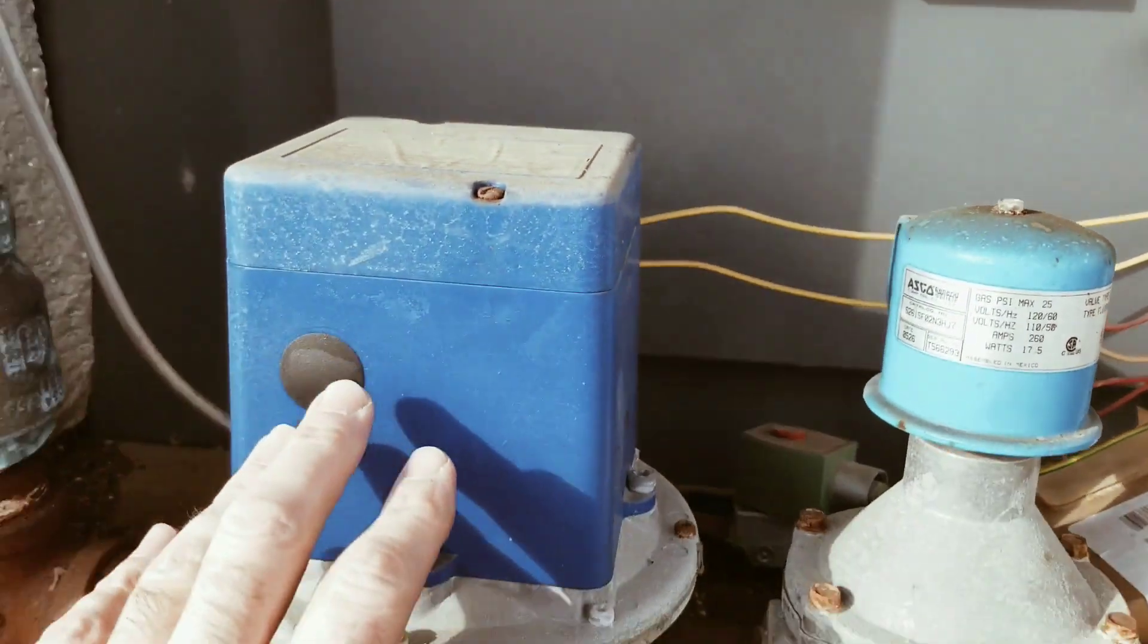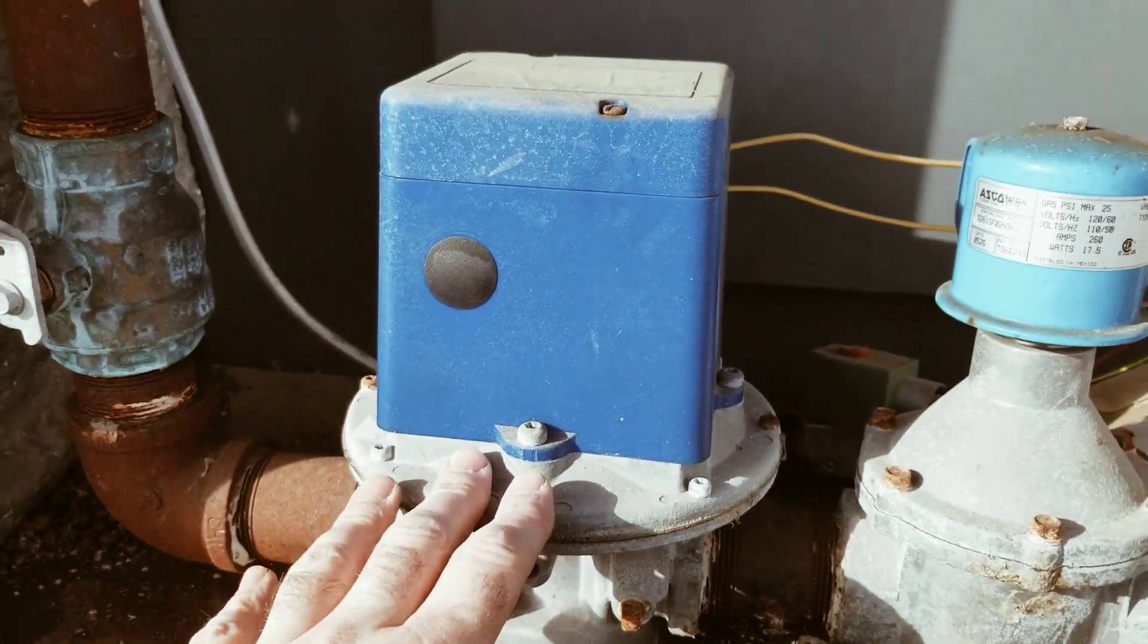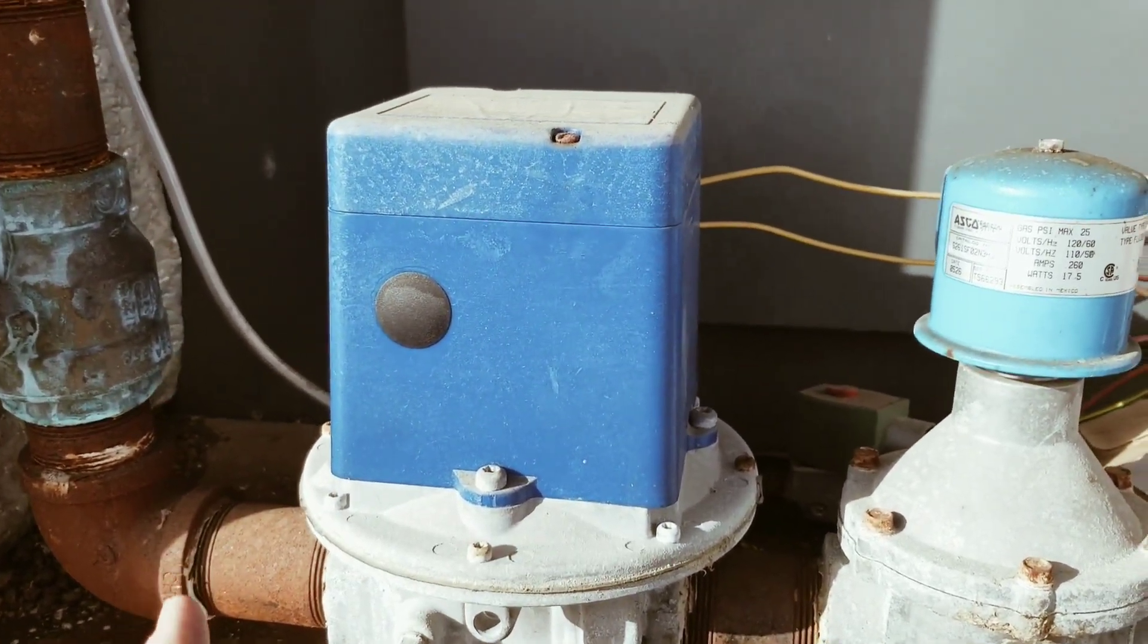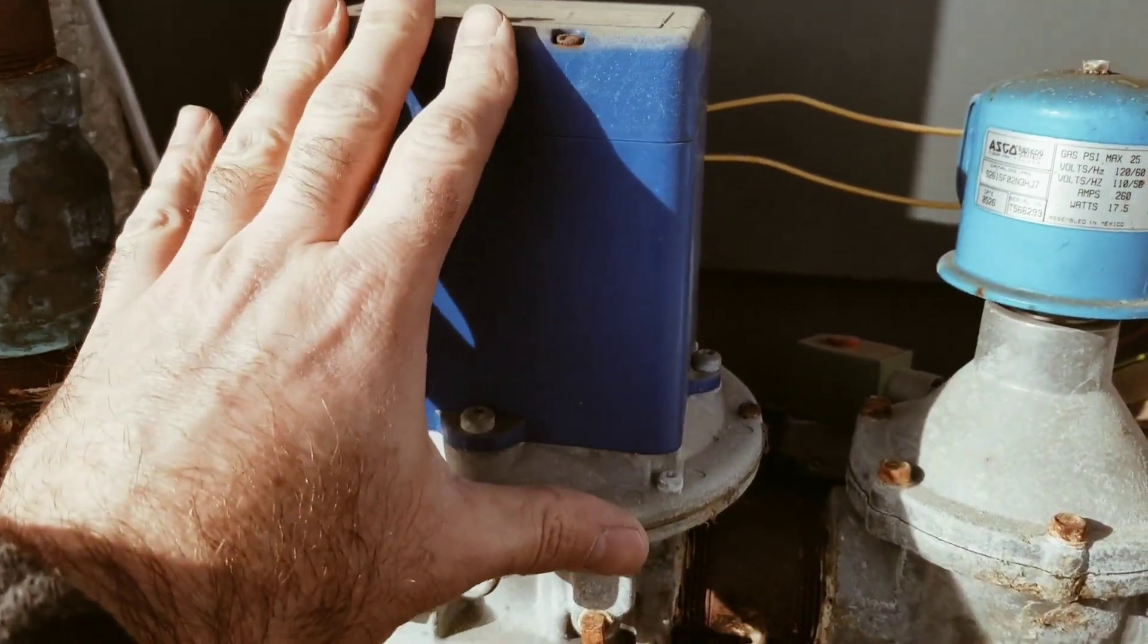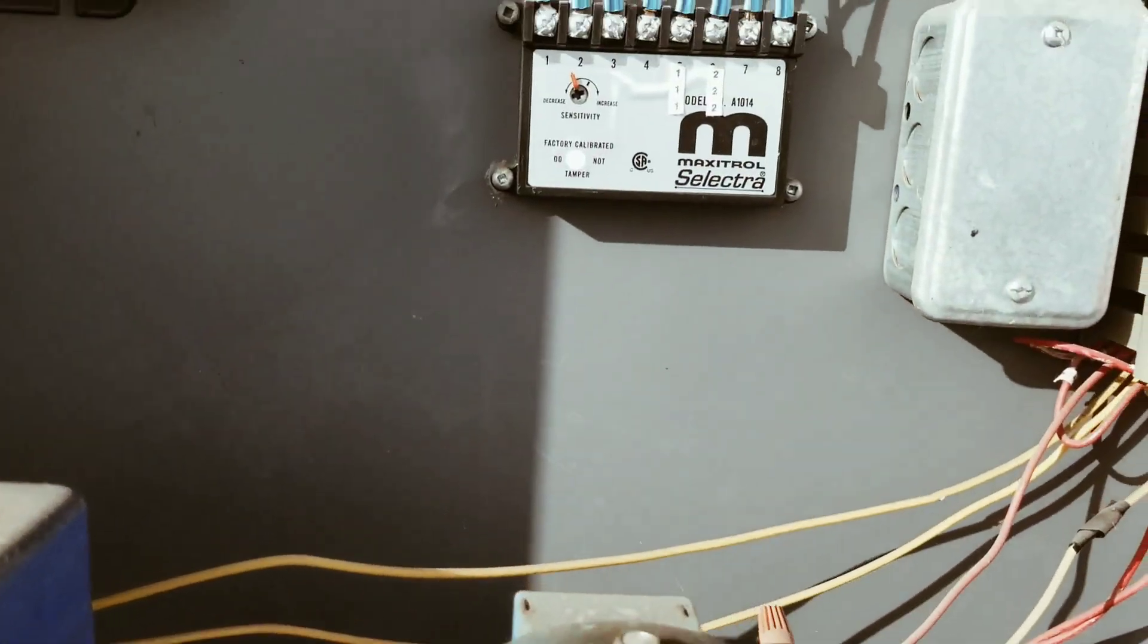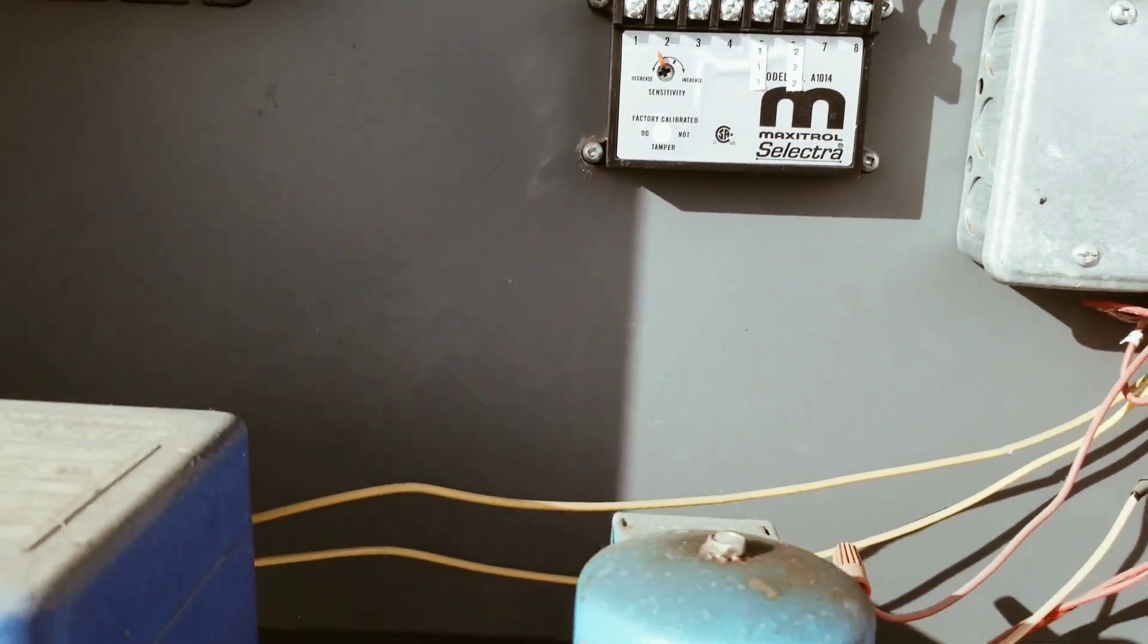Basically this gas valve here will modulate to maintain what you've set it to downstairs. So let's say you want the air to come into the building at 70 degrees. This valve here with this controller and the dial downstairs, that is responsible for doing that.